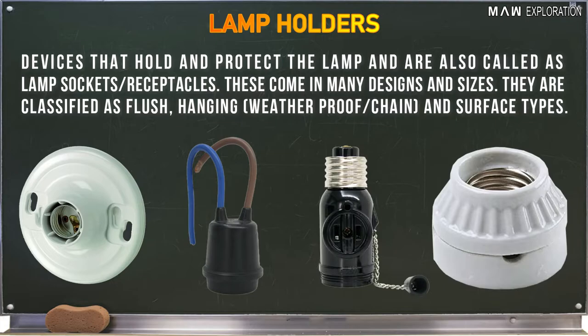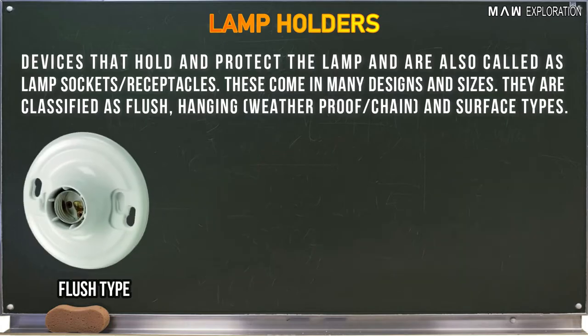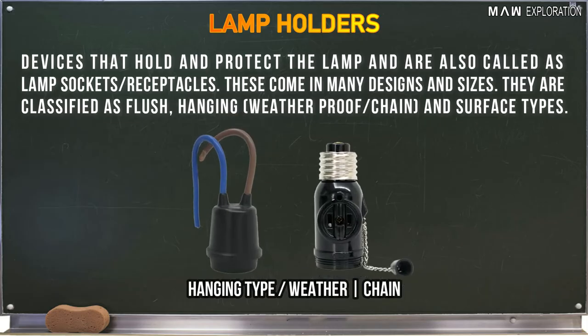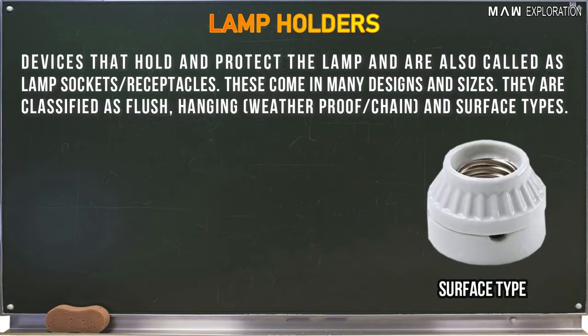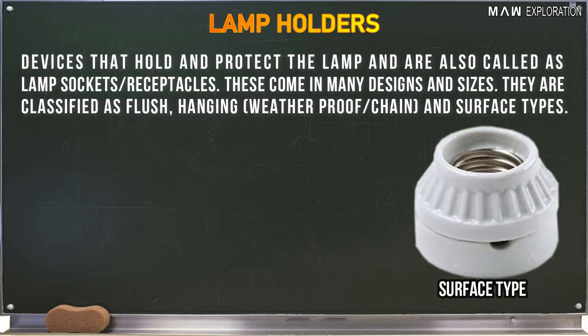Lamp holders are devices that hold and protect the lamp, and are also called lamp sockets or receptacles. These come in many designs and sizes. They are classified as flush type, hanging, and surface type.